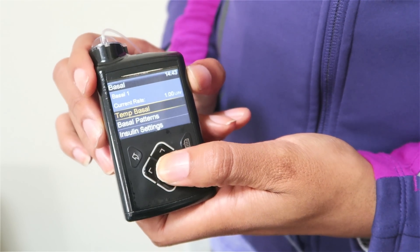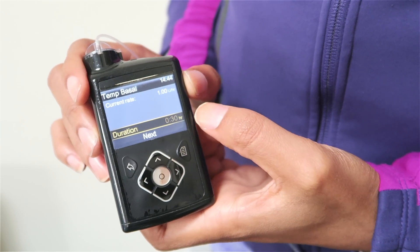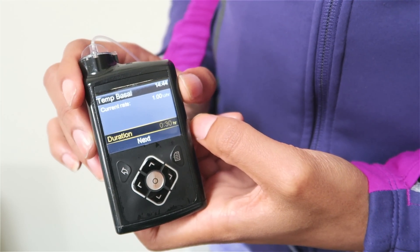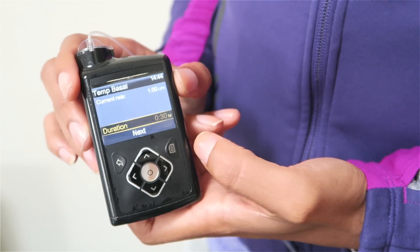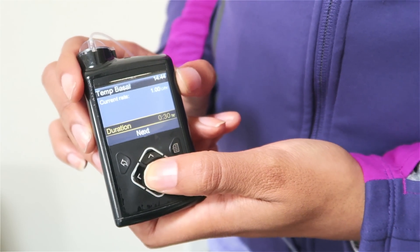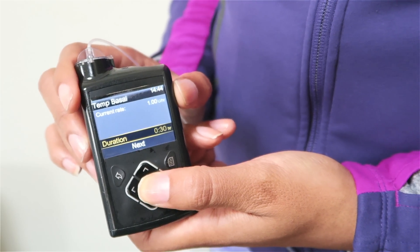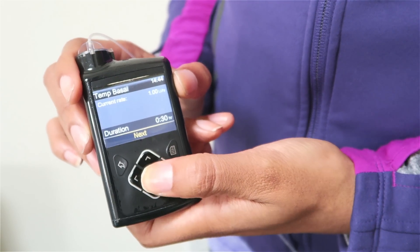And then if we click on to temp basal here, it asks me how long I'd like to reduce or increase my basal by. So if for example, we wanted half an hour because I was going for a half an hour run, you then click next.